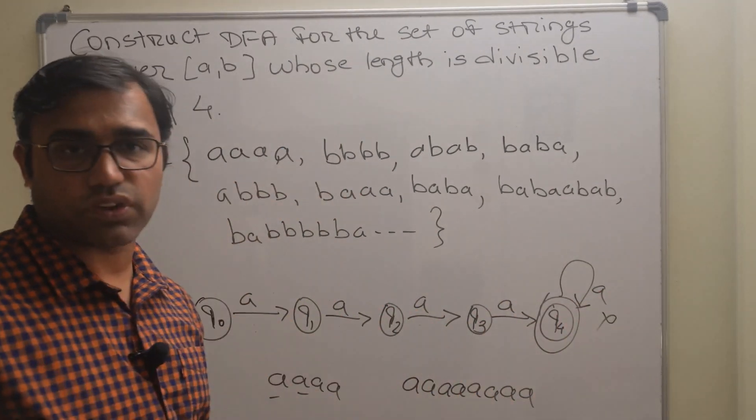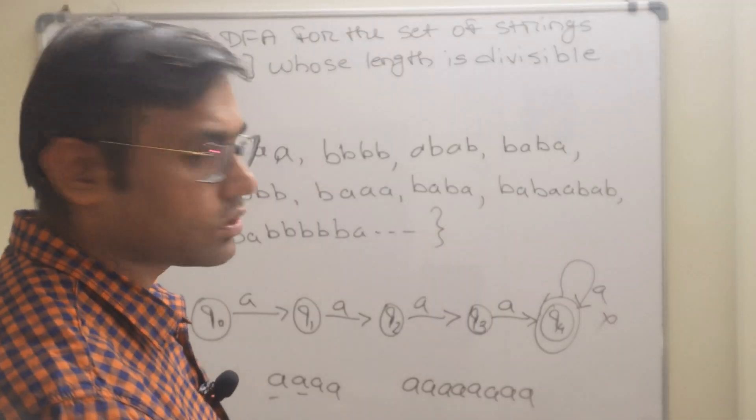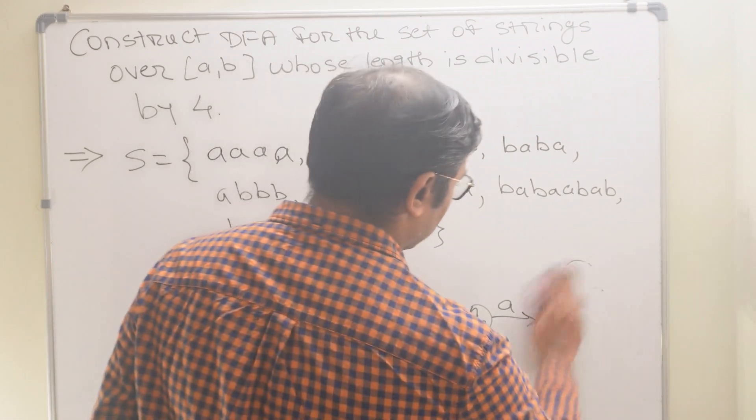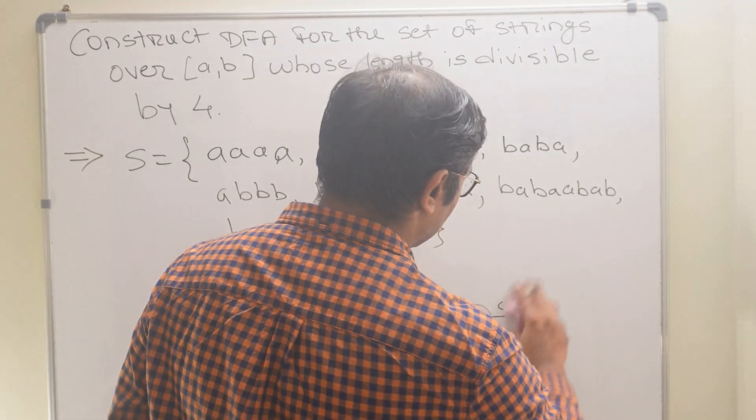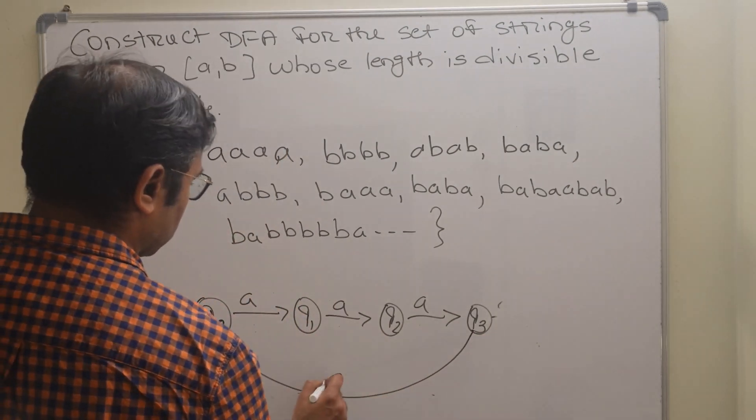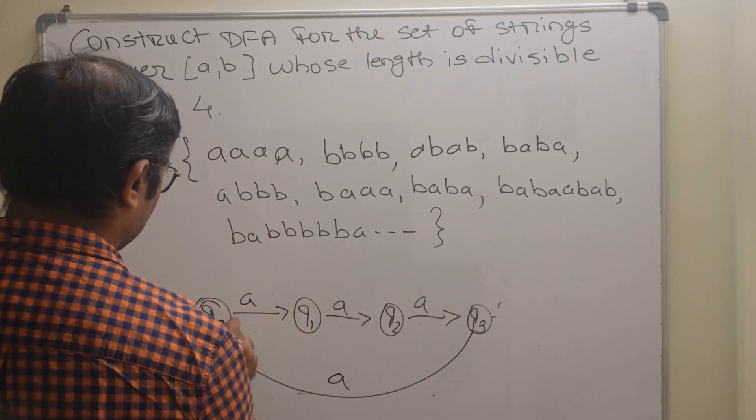So the solution is what we can do here is we will make the next transition to q0, so it will be a. So q0 will be final state.